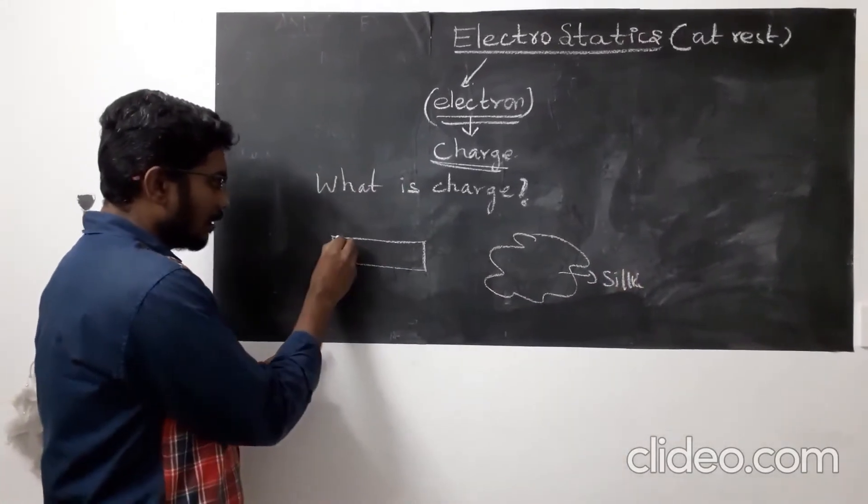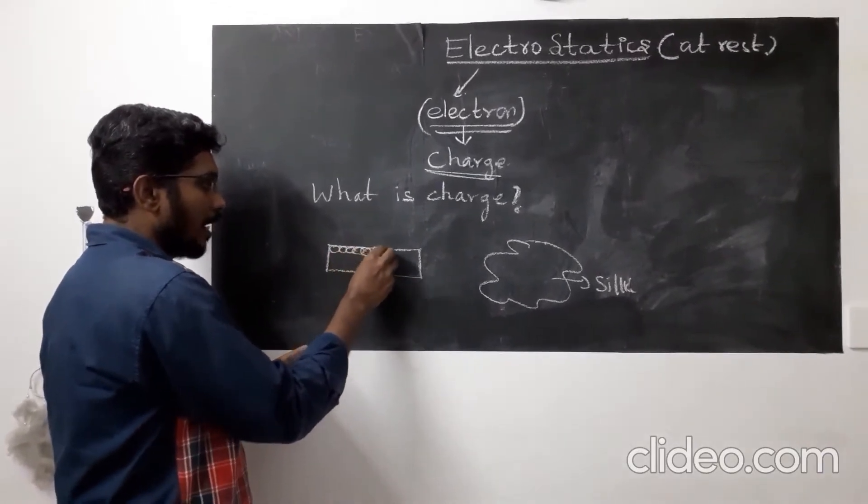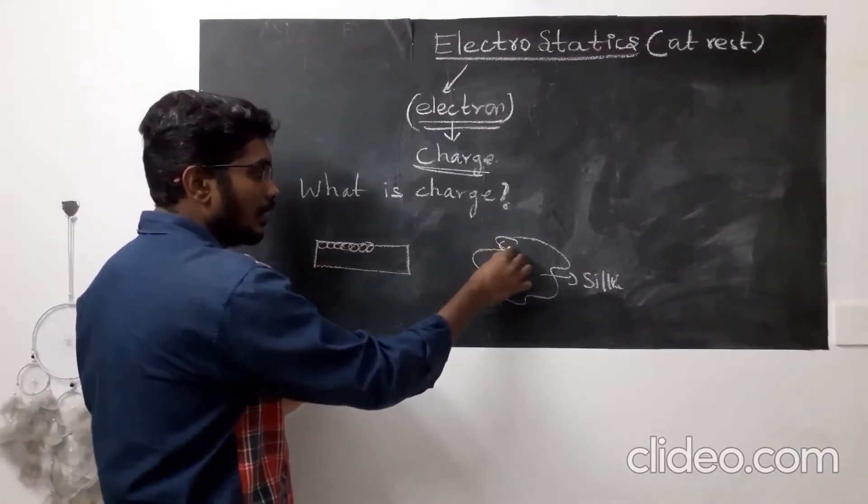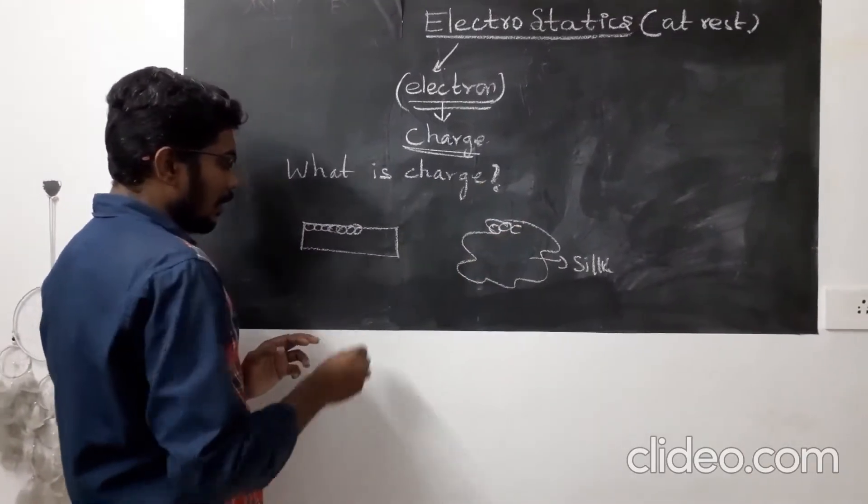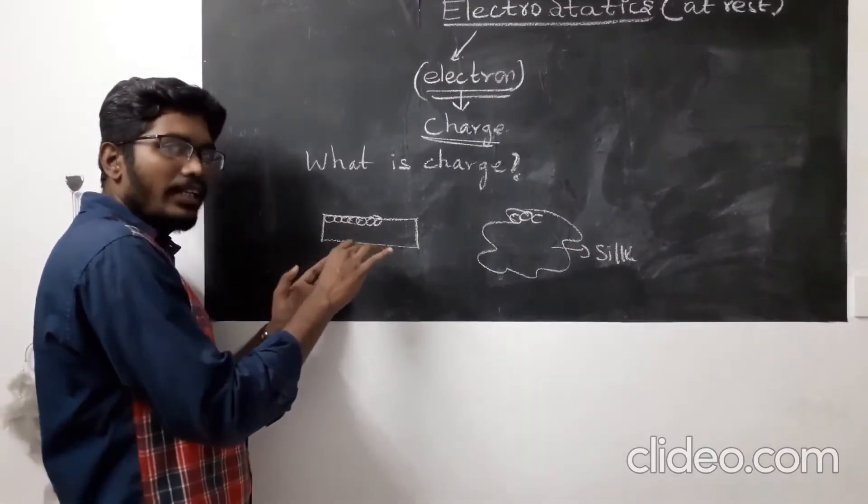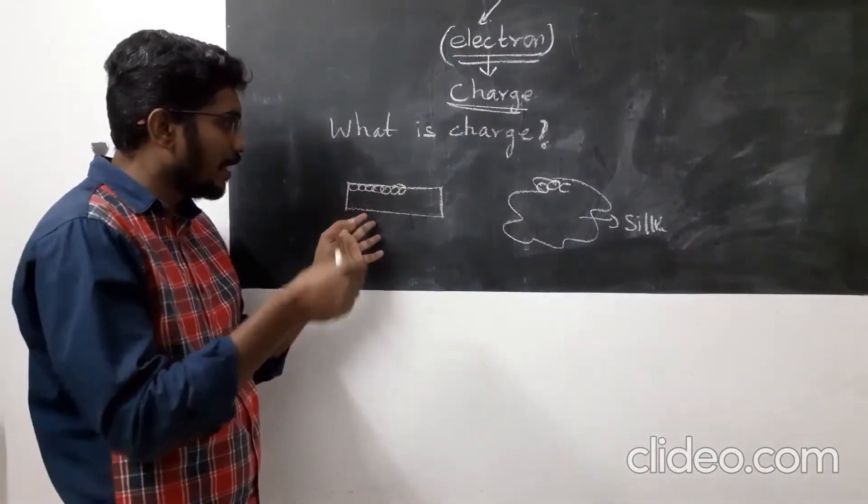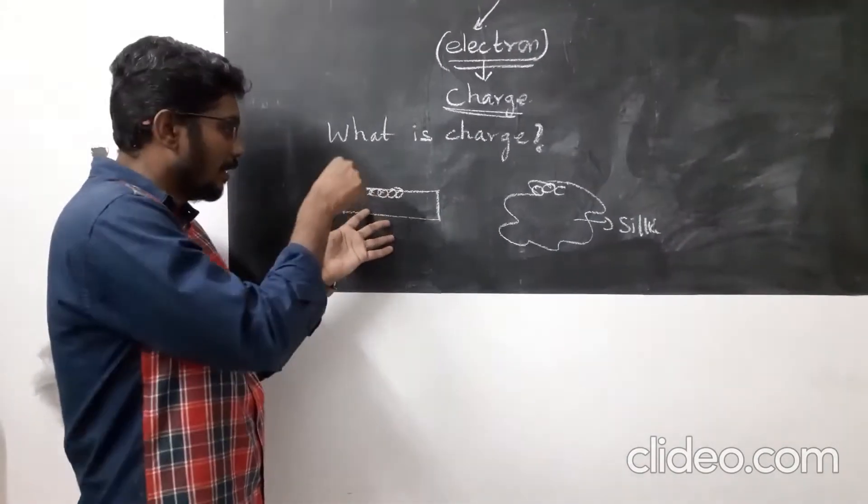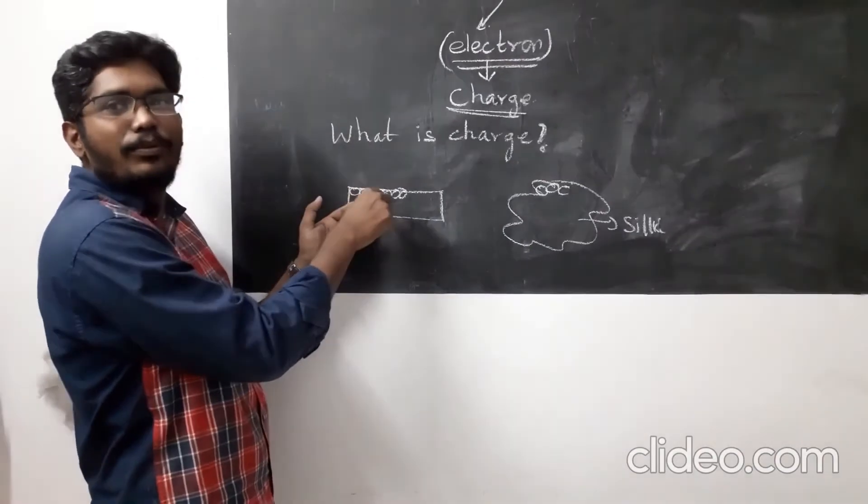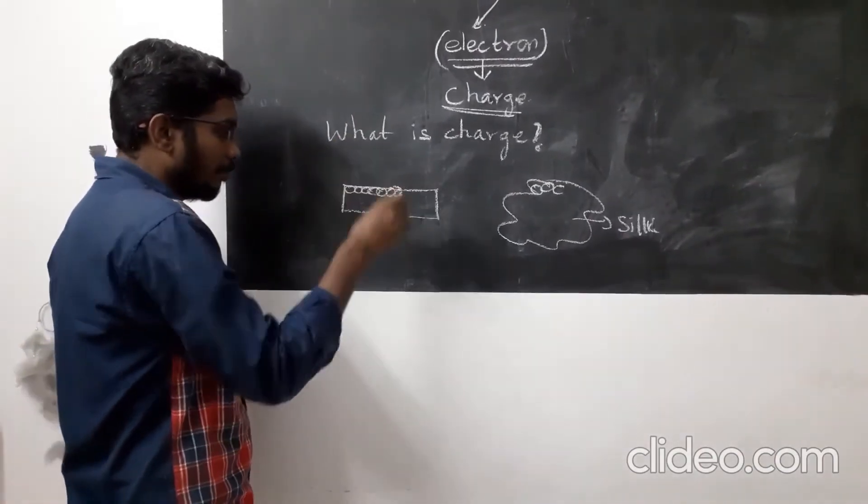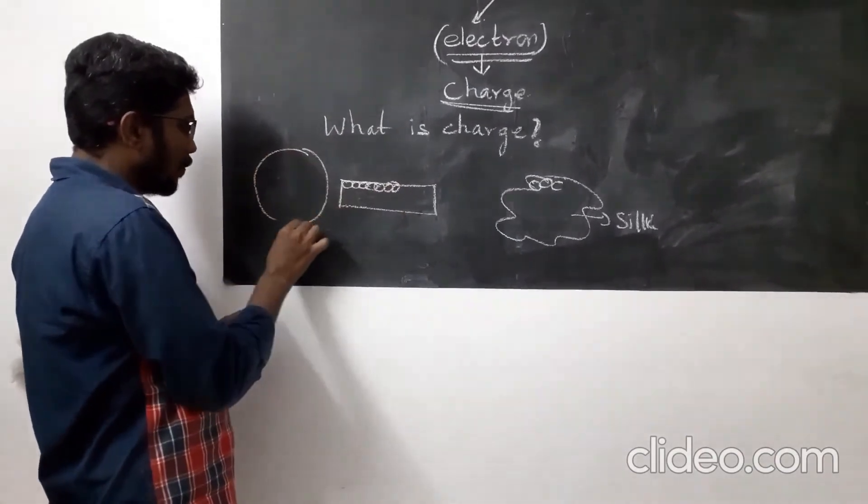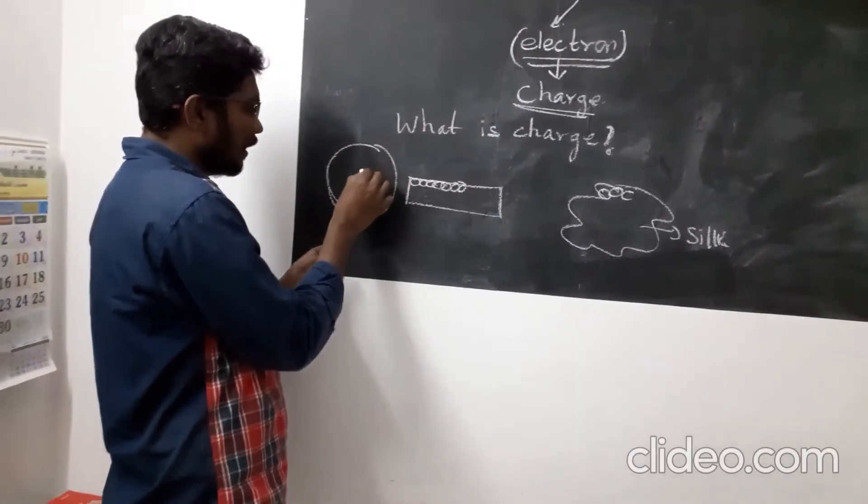This glass scale is made up of atoms, and of course this silk cloth as well. When you are going to give a valid scientific reason for any experiment, we have to get into the object. When we get into the object, we have to touch the concept of the atom. We know an atom is spherical in shape.